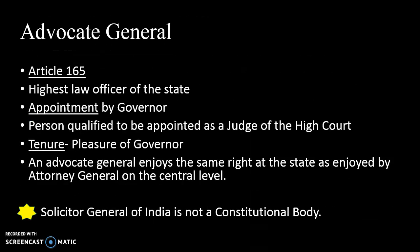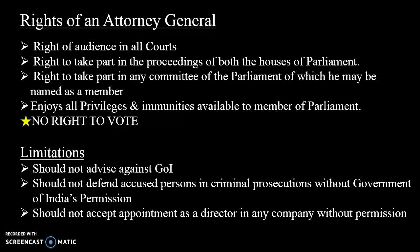The Advocate General is the state-level counterpart of the Attorney General, appointed under Article 165. Just as the Attorney General is the highest law officer of the country, the Advocate General is the highest law officer of the state. They are appointed by the Governor. A person qualified to be appointed as a judge of a High Court can be appointed as an Advocate General. They hold office during the pleasure of the Governor. An Advocate General enjoys the same rights at the state level as the Attorney General at the central level — for example, where the Attorney General has the privileges available to members of Parliament, the Advocate General has the privileges available to members of the Legislative Assembly.